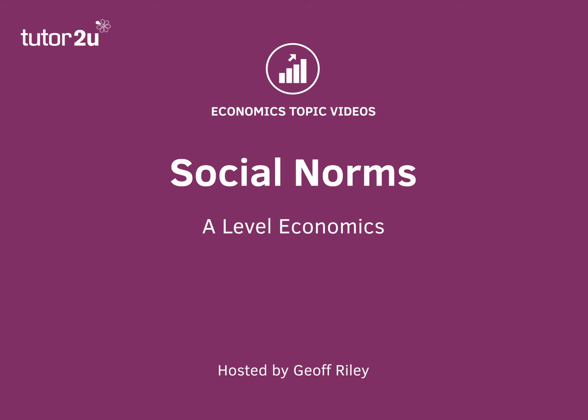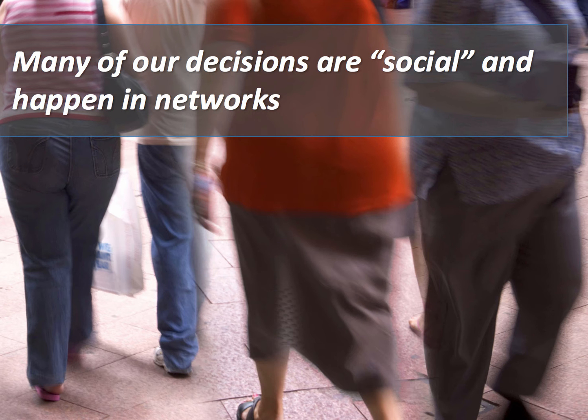What that means is that people, individuals and groups are influenced by social preferences, by the strength of their identity, and also by the social norms that exist within the community within societies. We often find that people imitate the behaviour of others almost automatically. This is something that's not assumed in conventional economic thinking. Many of the decisions and choices that people make are inherently social, contextual and of course they happen within networks.